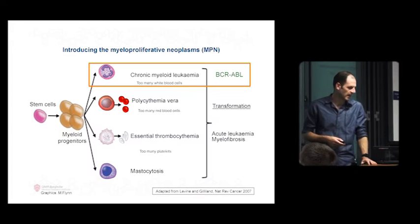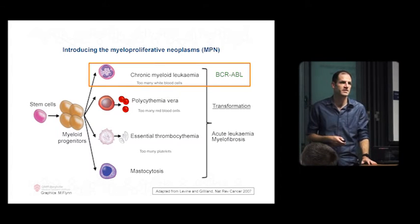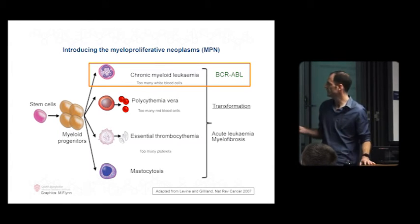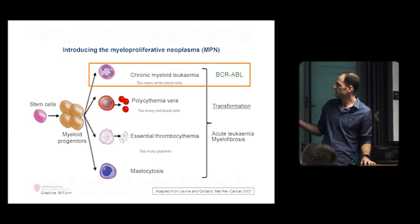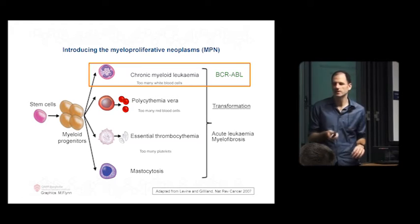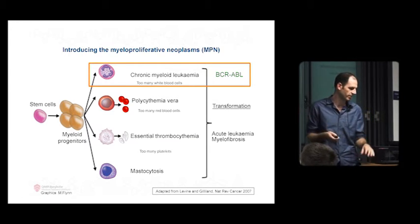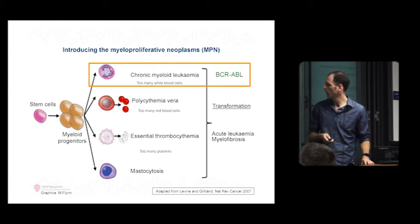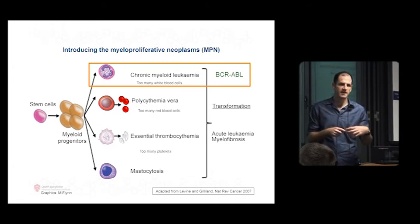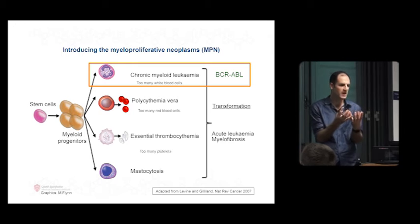The different types of myeloproliferative neoplasms are all about the too many diseases. We have too many white blood cells in chronic myeloid leukemia, too many red blood cells is polycythemia, too many platelets in essential thrombocythemia, and lots of other myeloid cells like mast cells, which leads to mastocytosis. What they're all linked by is this too many idea.